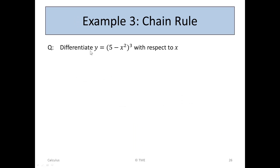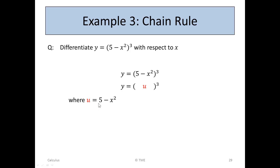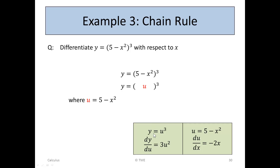We now look at Example 3: the chain rule. Differentiate y = (5 − x²)³ with respect to x. This is tricky — we could multiply it out by itself three times, but the power might not always be 3; it could be 13. So instead we simplify by letting u = 5 − x², so y = u³ where u = 5 − x².